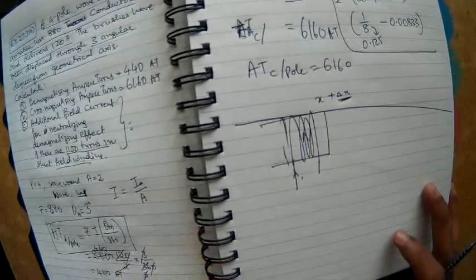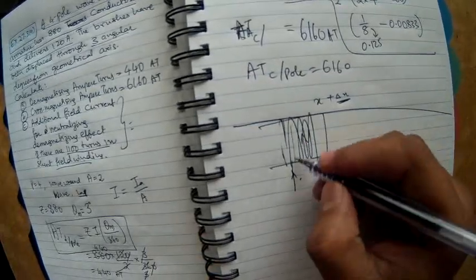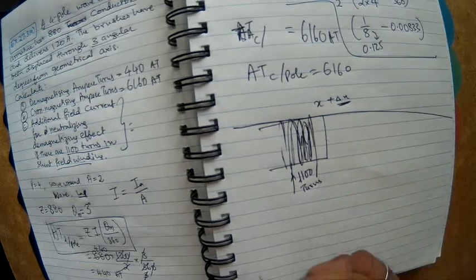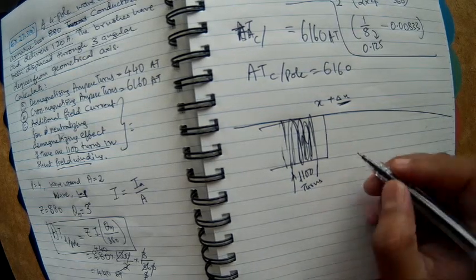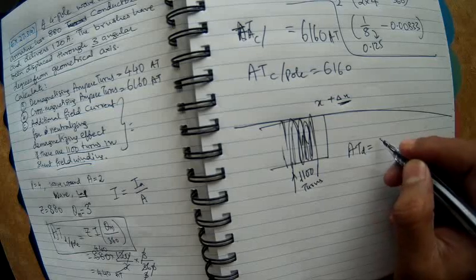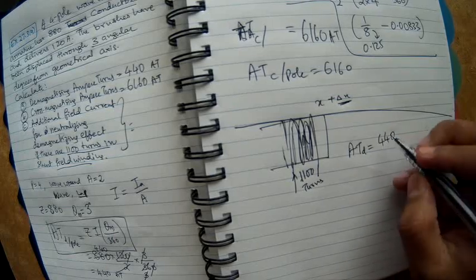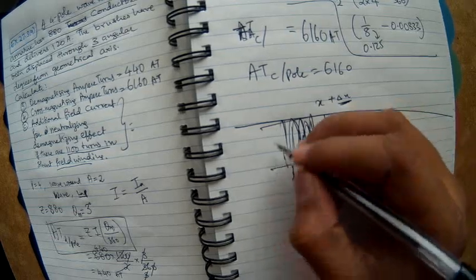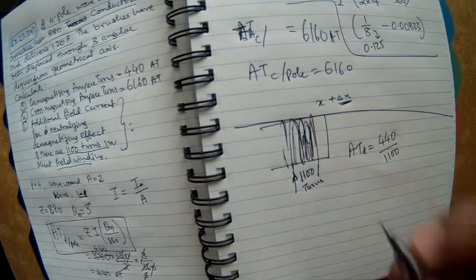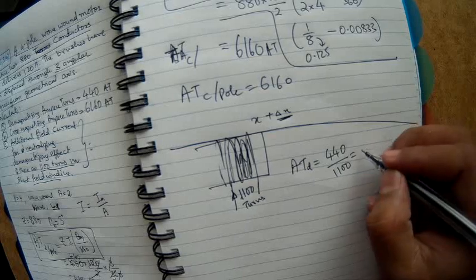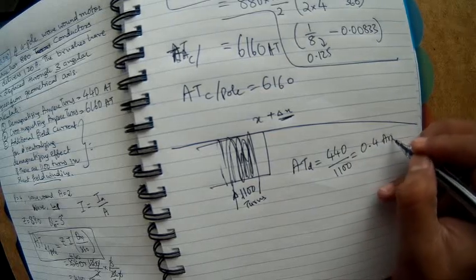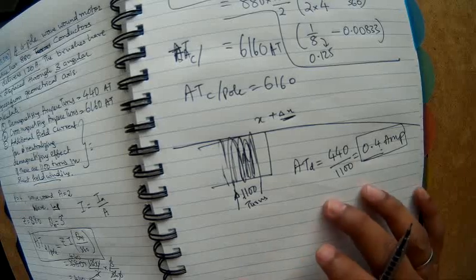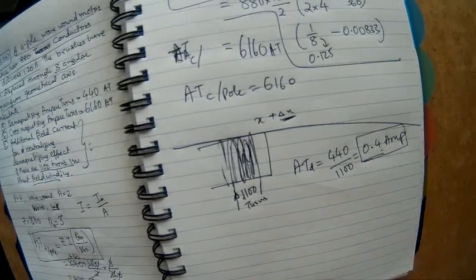The field winding has 1100 turns. The ampere turns causing demagnetization is 440 ampere turns. If I divide this by 1100, I don't want to add any extra turns, just some extra current to compensate these ampere turns. If I do this I get 0.4 amperes. Therefore, if I send an additional 0.4 amperes into the shunt field winding, that will take care of the demagnetization effect. That's what is asked in the question.